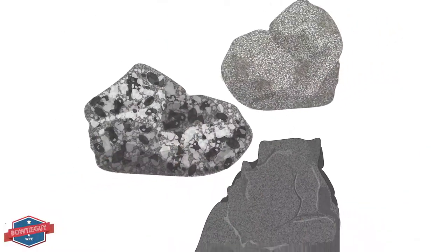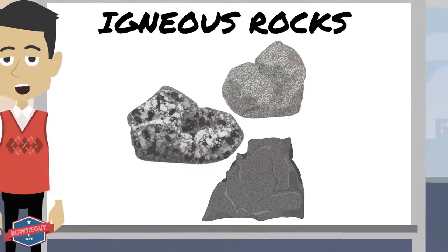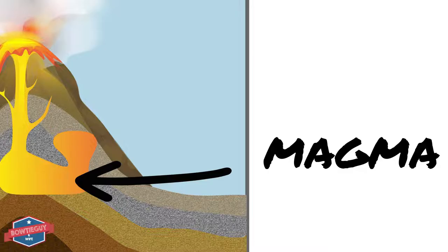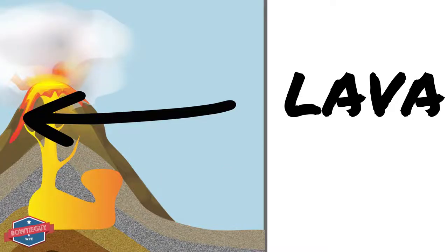Basalt, gabbro, and pumice are three types of igneous rocks. Magma is molten rock that is held within a volcano's chamber. Lava is molten rock that is ejected from a volcano.